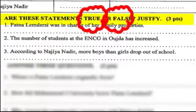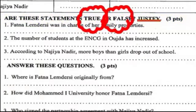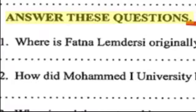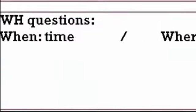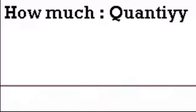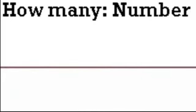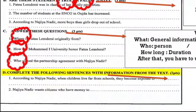Question B is about true or false — and of course it's not enough just to write true or false, you have to justify. Question C is 'answer these questions,' which are WH questions. To remind you: 'what' is for general information, 'when' for time, 'where' for place, 'who' for person, 'how' for manner, 'how much' for quantity, 'how long' for duration, 'how many' for number, and 'how old' for age.